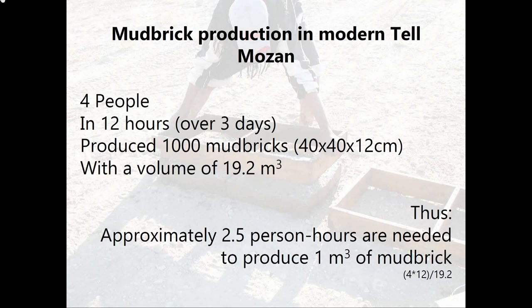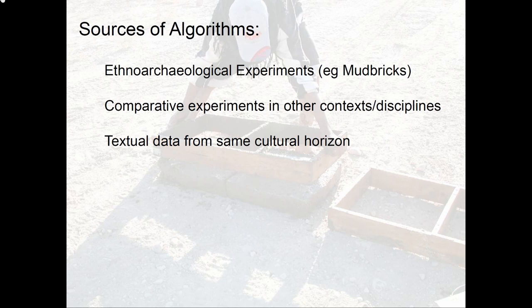The data from this experiment gives us the fact that four people in 12 hours, spread over three days, produced about a thousand mud bricks of 19.2 cubic meters. From that, we can derive an algorithm saying that 2.5 person hours are needed to produce one cubic meter of mud brick. In this case, the algorithm is derived from experimental archaeology, but other algorithms can be derived from comparative experiments, anthropological experiments, as well as information from textual sources.